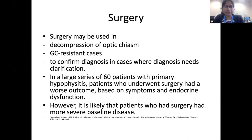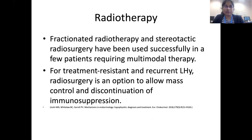Surgery may be used for decompression of the optic chiasm, glucocorticoid-resistant cases, or to clarify the diagnosis. In a large series of 60 patients with primary hypophysitis, those who underwent surgery had a worse outcome based on symptoms and final endocrine dysfunction; however, those patients had more severe baseline disease. Radiotherapy is another option: fractionated and stereotactic radiotherapy have been used successfully in patients requiring multimodal therapy, and radiosurgery is an option for treatment-resistant and recurrent hypophysitis to allow mass control and discontinuation of immunosuppression.